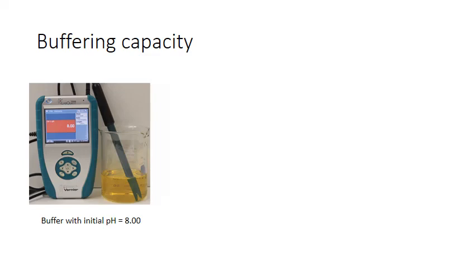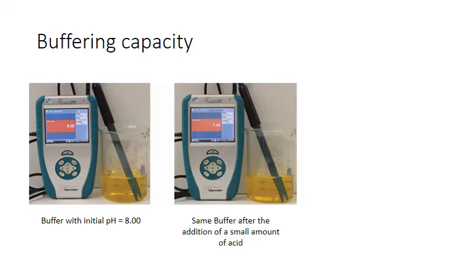Even the most effective buffer can be overcome if you add too much acid or base. Here we see a buffer with an initial pH of 8. The yellow color reflects the acid-base indicator methyl orange, which is yellow in basic pHs. Now if you add a little acid to the buffer, the pH does drop a little bit, but not too much.